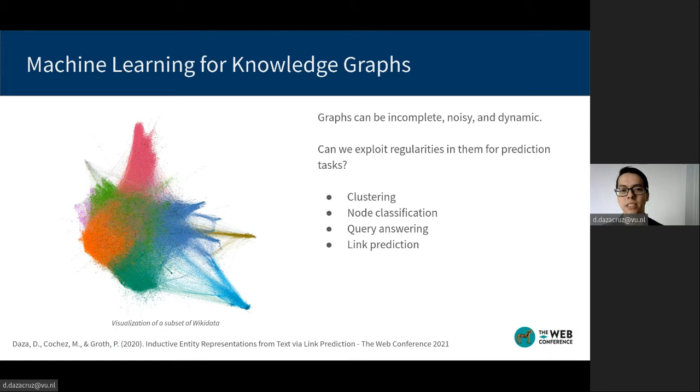In this scenario, machine learning can help us to exploit patterns in the structure of the graph to provide predictions that are robust against noise in the knowledge graph. Some of the tasks that we can tackle with this approach are clustering, node classification, query answering, and link prediction.